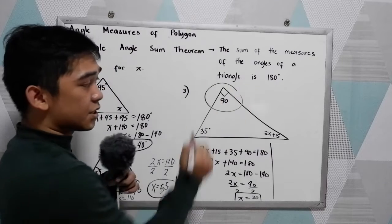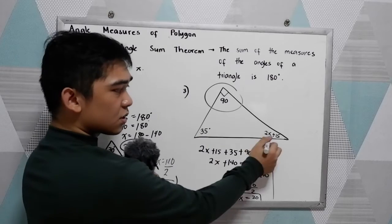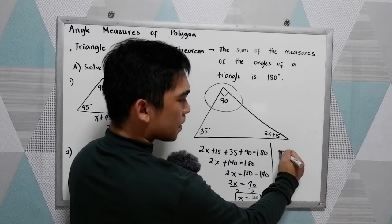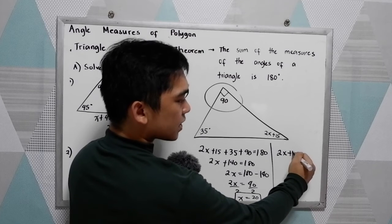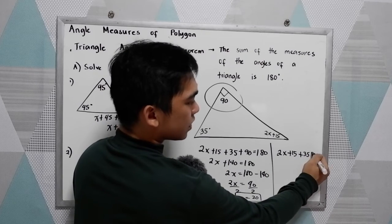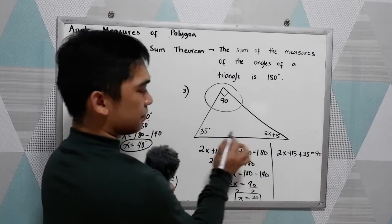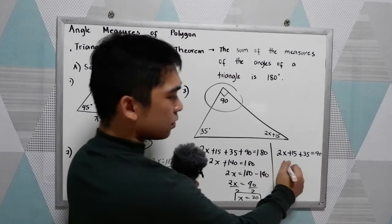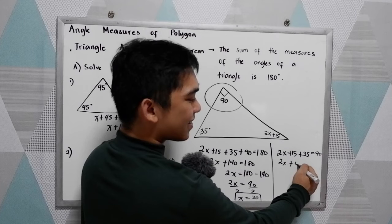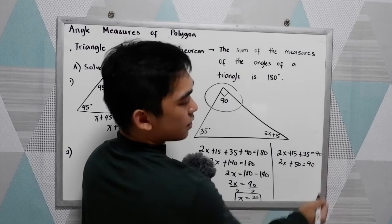Therefore, the sum of these two is equal to 90. So we can say that 2x plus 15 plus 35 is equal to 90. Now, 2x plus 15 plus 35, that is 50. Is equal to 90.